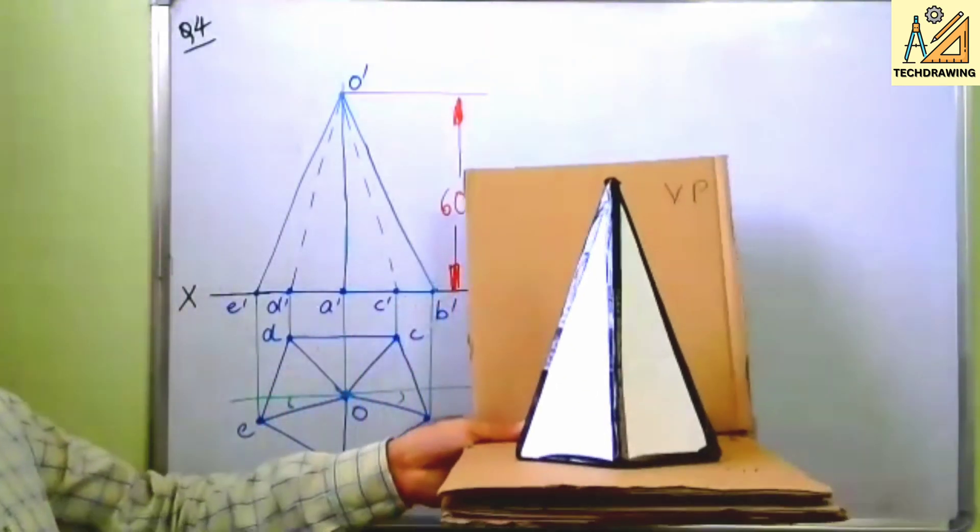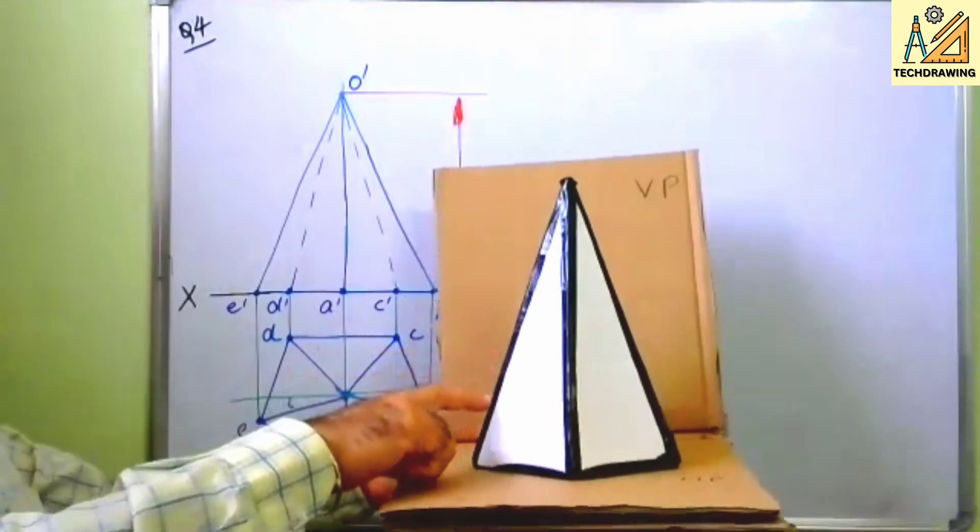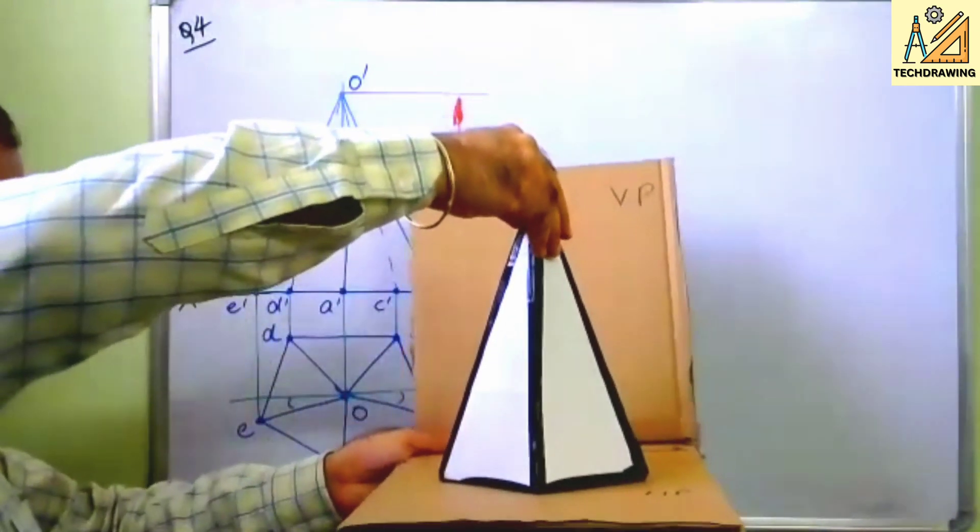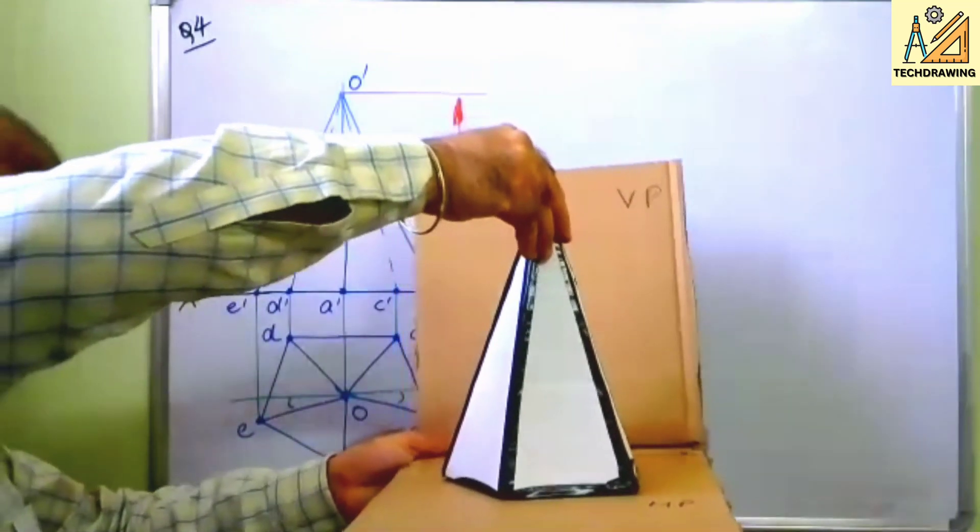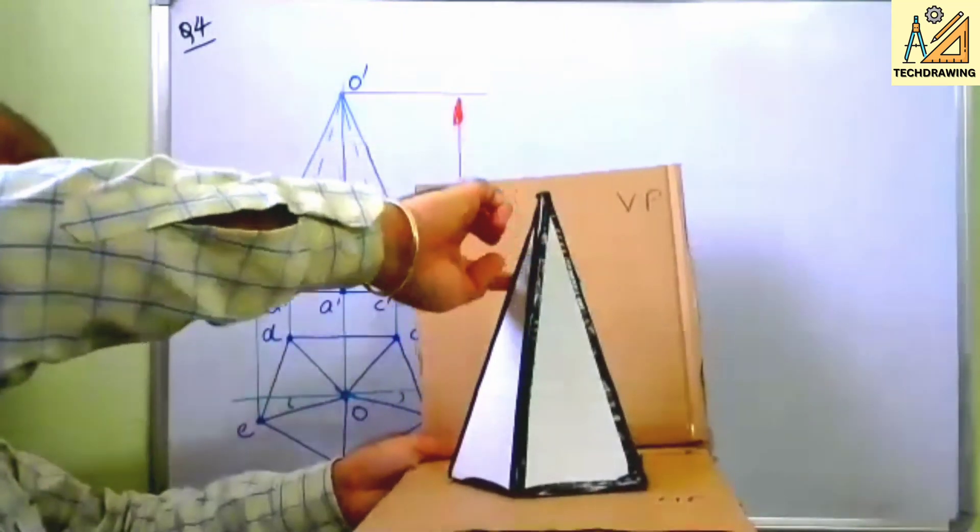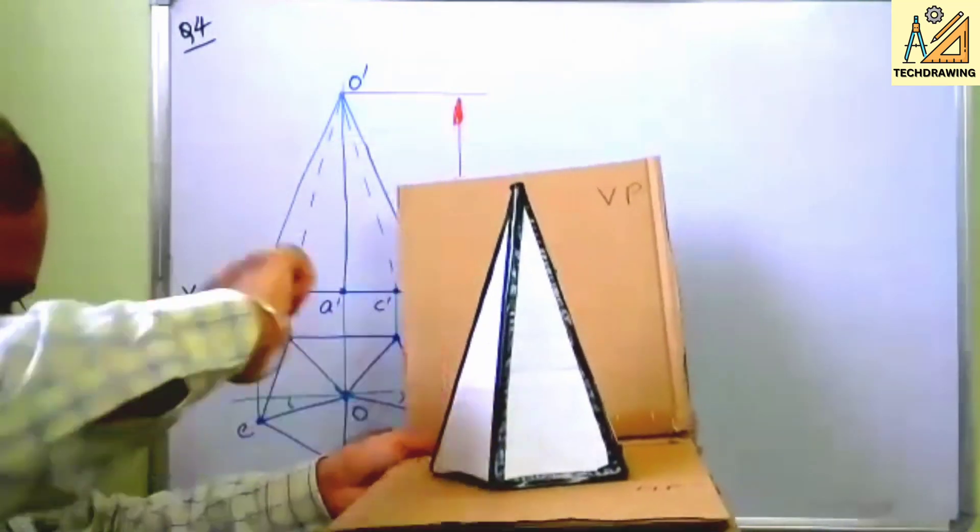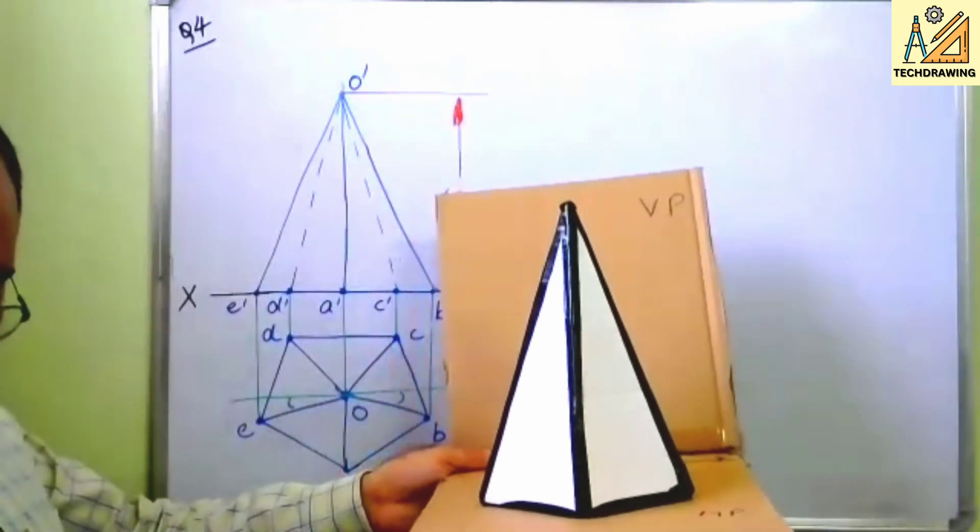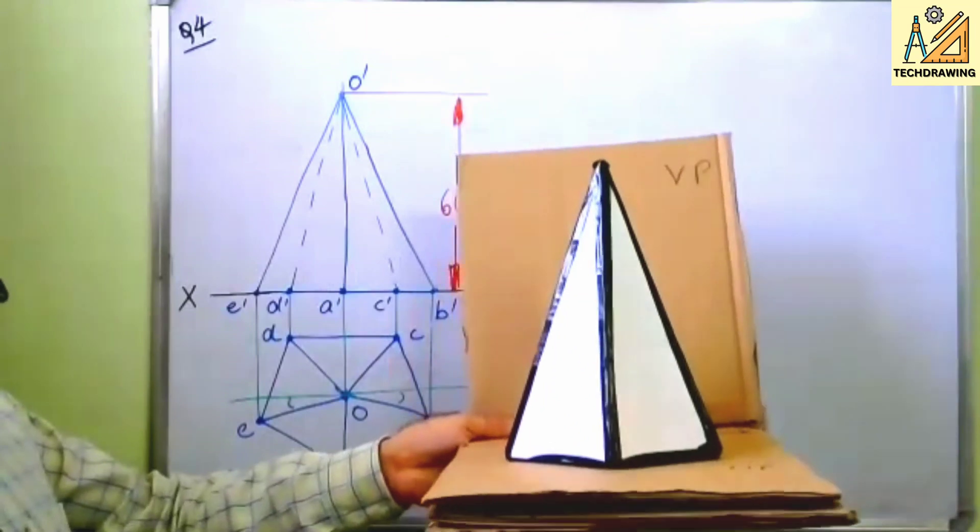Obviously these are also inclined. OB and OE are inclined to the horizontal. So here this is actually inclined. It is not the actual length of the slant edge.